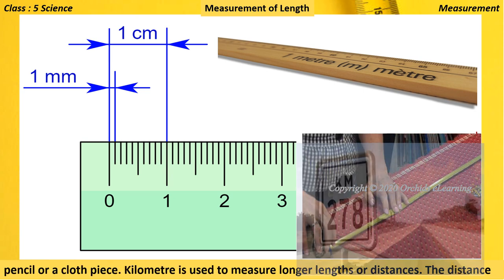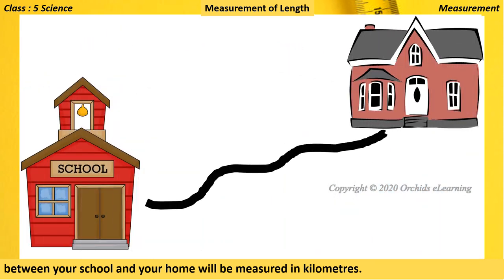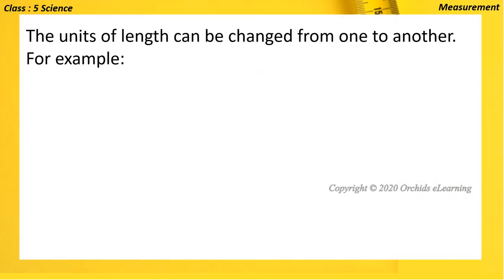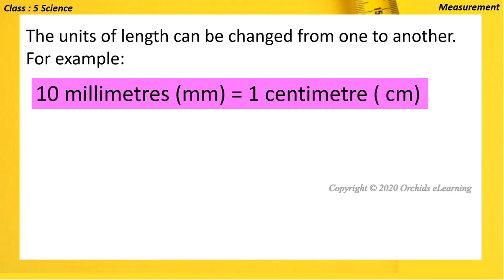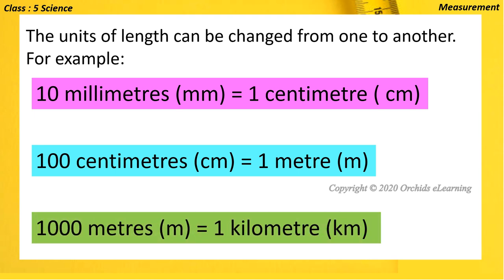The kilometer is used to measure longer lengths or distances. For example, the distance between your school and your home is measured in kilometers. The units of length can be changed from one to another: 10 millimeters equals 1 centimeter, 100 centimeters equals 1 meter, and 1000 meters equals 1 kilometer.